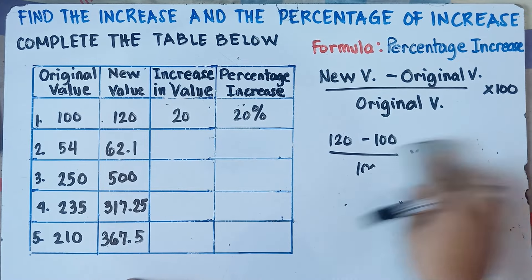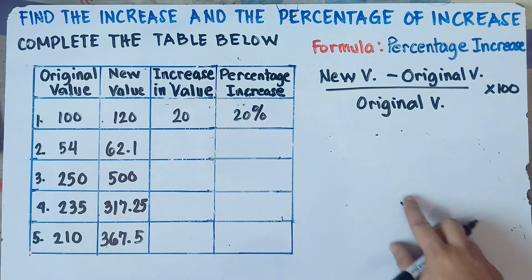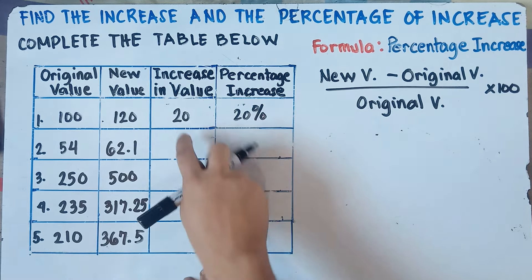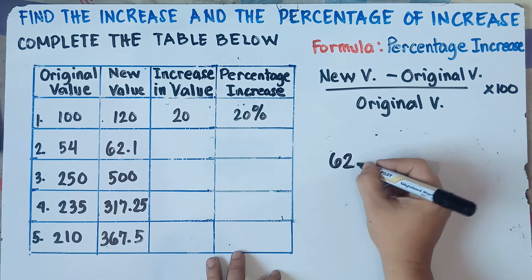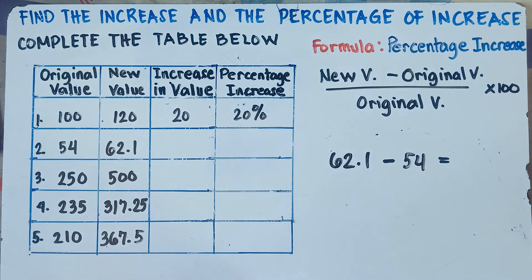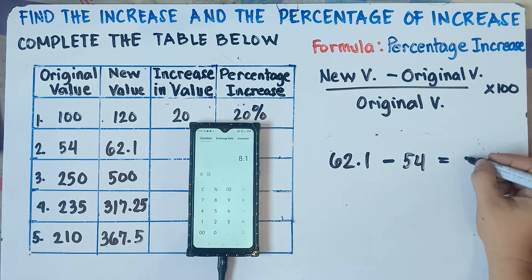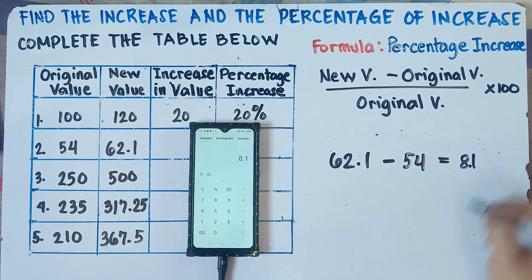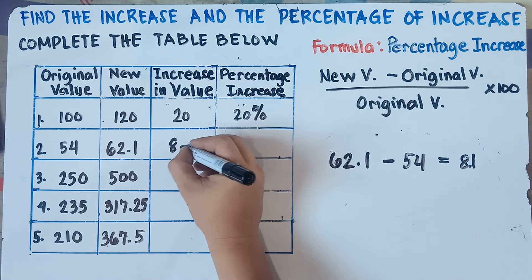Let's have number two. New value is 62.1, original value is 54. Subtract to get the increase in value: new value minus original value, so 62.1 minus 54. Using a calculator, you get 8.1. So the increase in value is 8.1.